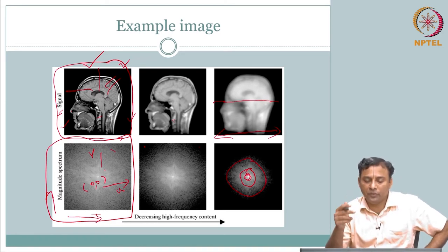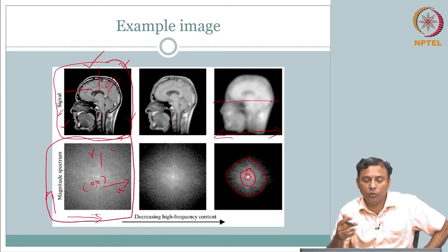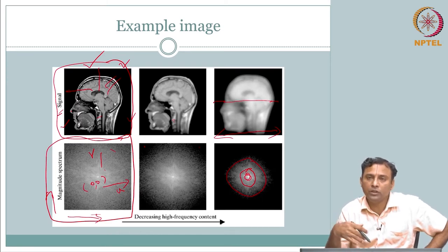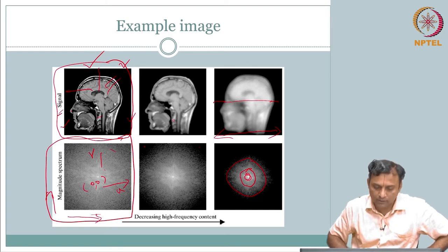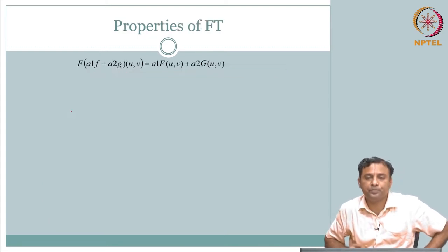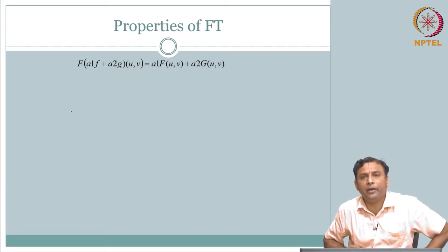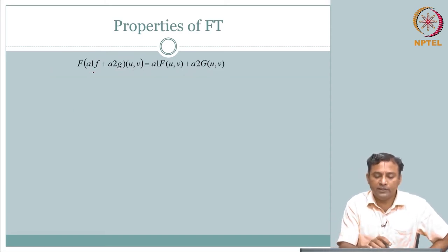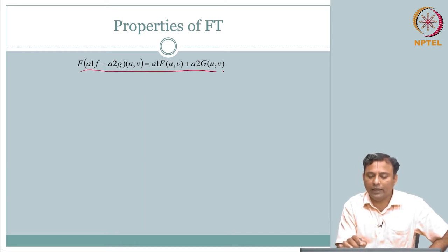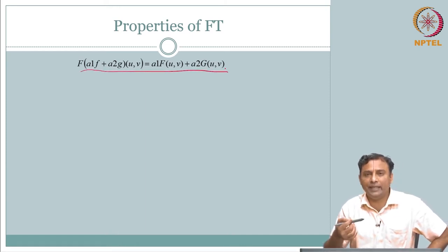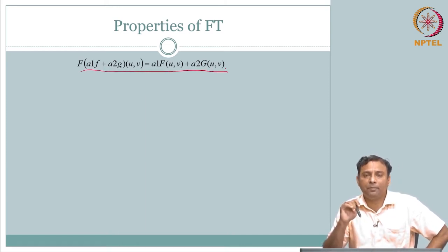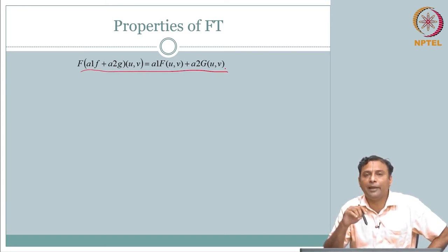We now know what frequency is, what the Fourier transform is, and how to get from the spatial domain to the frequency domain. Let us now move on to look at some of the properties. Since this is a review, I will just list them out, giving you a few seconds to perhaps recall and connect with what each property name would be.